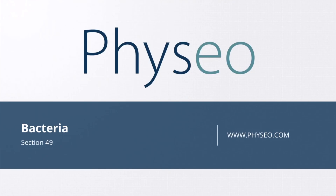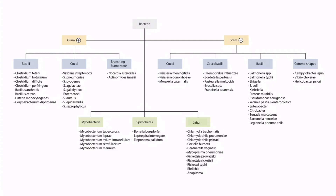Welcome to section 49 of Bacteria. In this section, we will be discussing Gardnerella vaginalis. This table shows the list of all the bacteria you need to be familiar with for step one. Looking at the other category, we can see Gardnerella vaginalis.